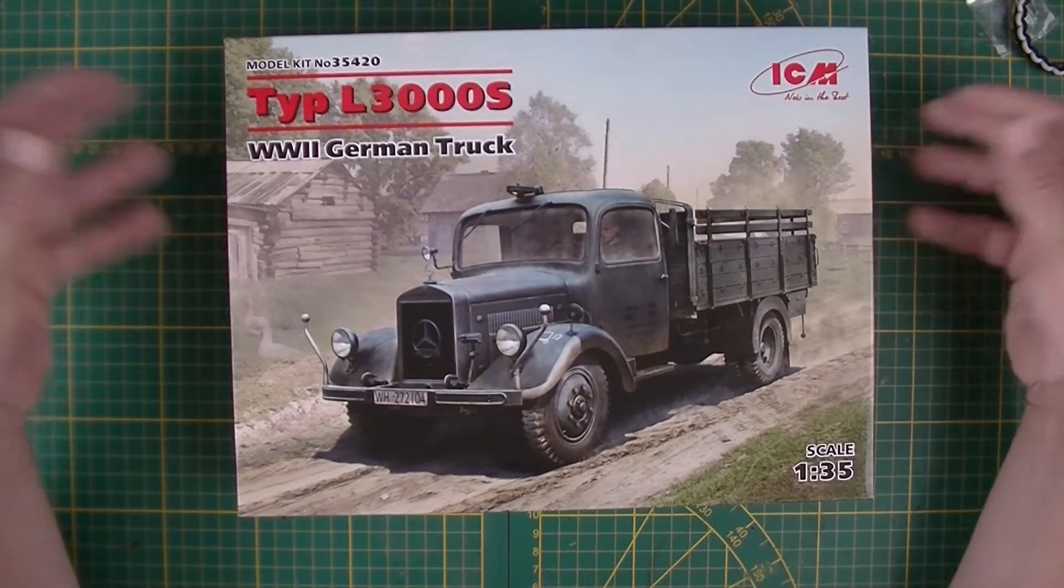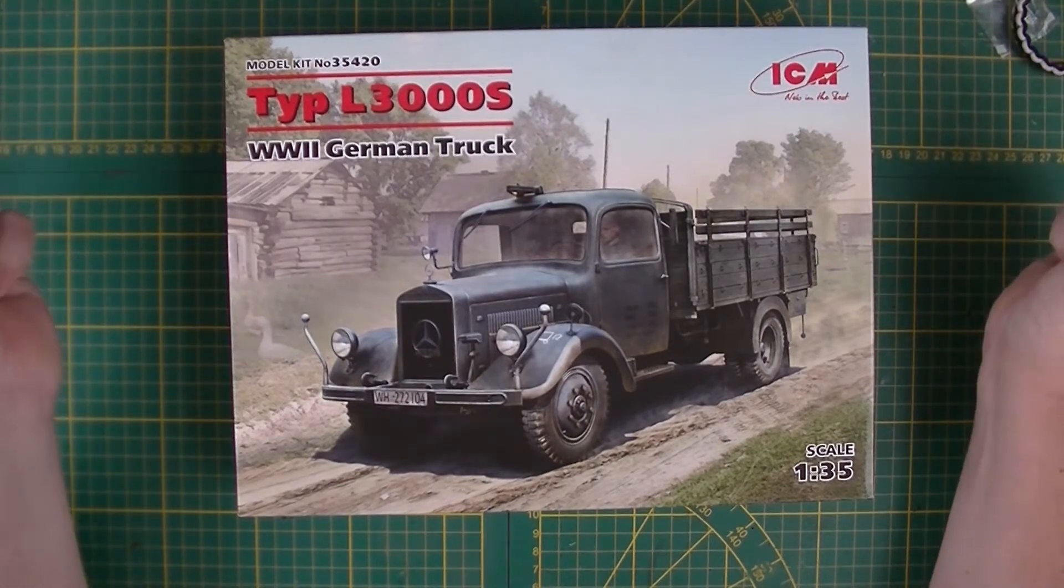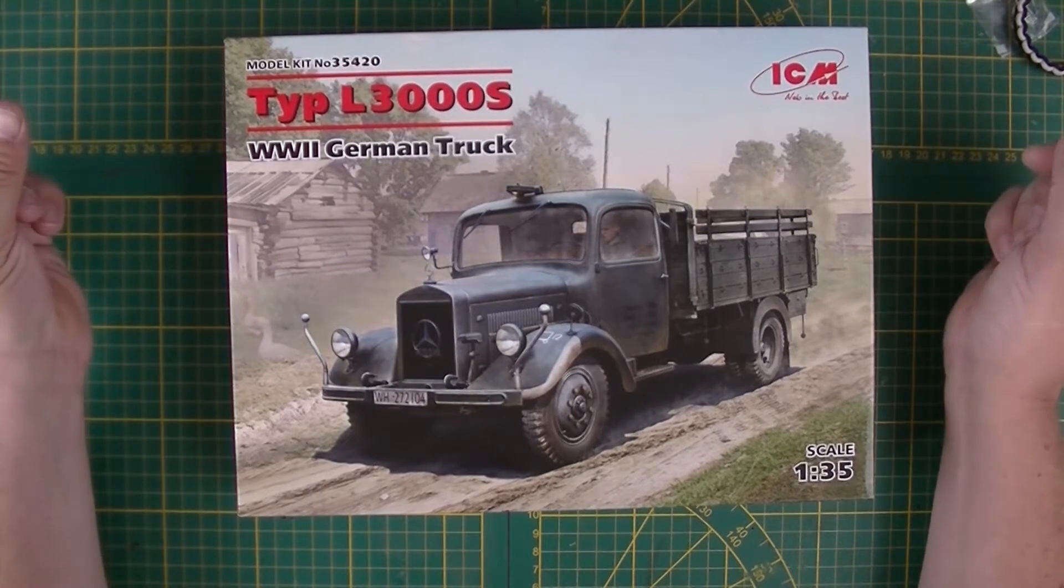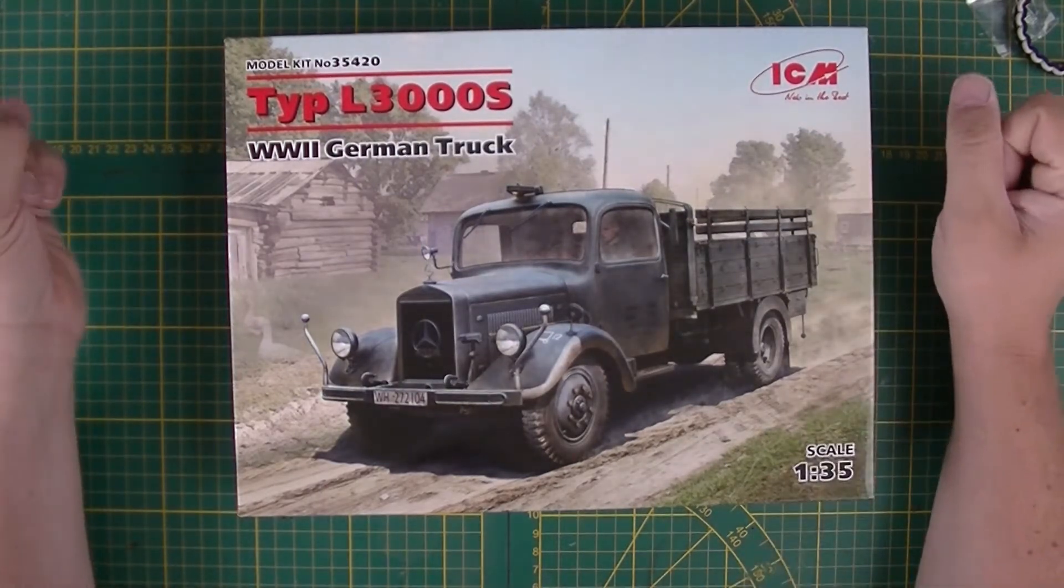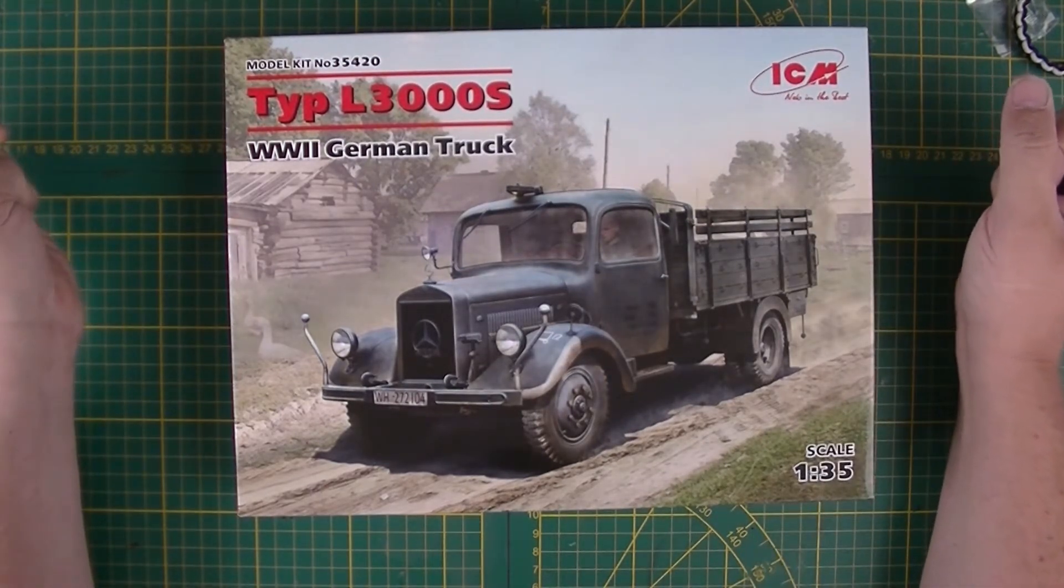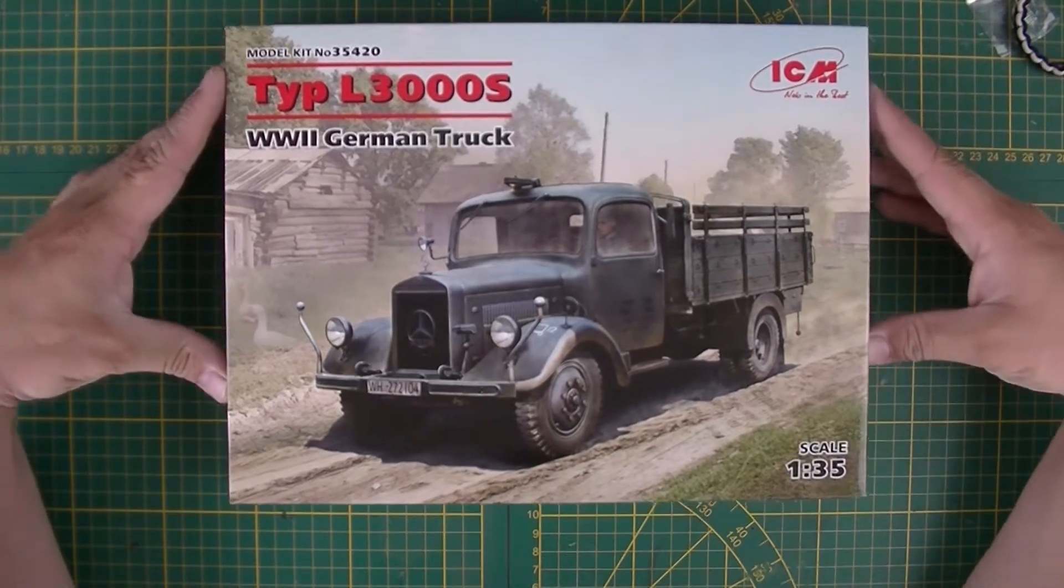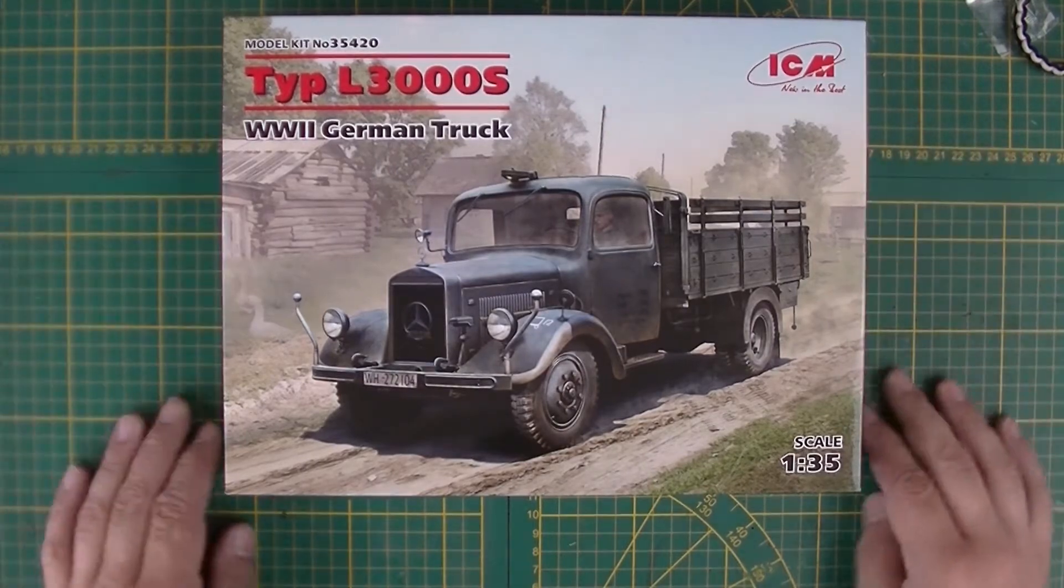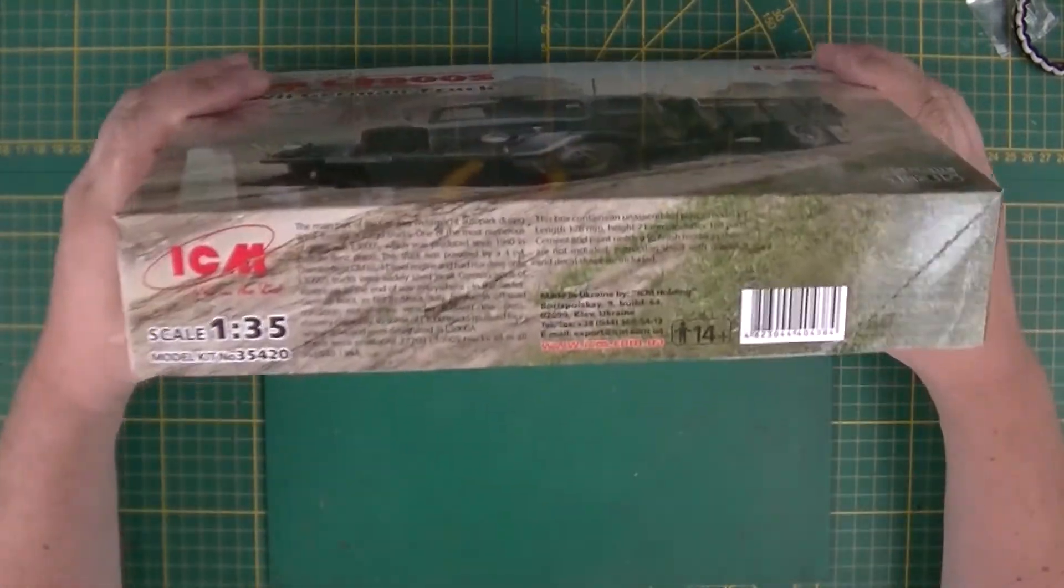The ICM kit will be my first review for the ICM kit ever. And this is the newly released WWII German truck, the Type L3000S Mercedes. Let's see the box art, looks pretty.